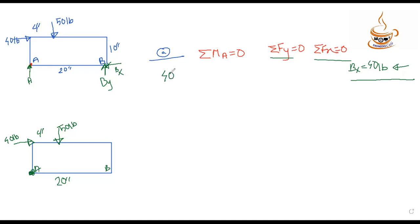We have the 40-pound load with a moment arm of 10 inches — giving a clockwise moment. The 50-pound vertical load has a line of action at 4 inches from the reference point, also creating a moment. The By reaction acts at 20 inches from the reference. Setting up the moment equation: 40×10 plus 50×4 minus By×20 equals zero.